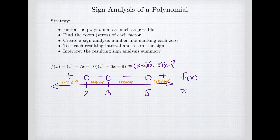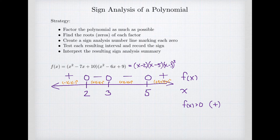The reason we do sign analysis is to understand where a function is positive and negative. We use this to help solve inequalities — where the function is positive means greater than zero, or negative means less than zero. For example, if I'm solving f(x) > 0, I look for all the x values that make the function positive. From the sign analysis number line, I get the interval from minus infinity to 2 union 5 to infinity.